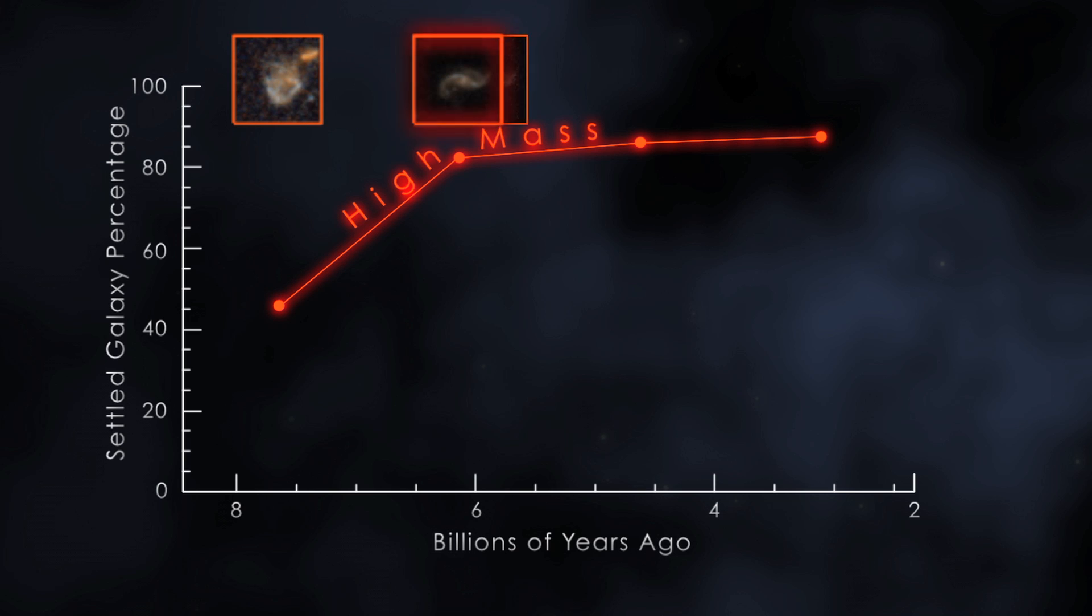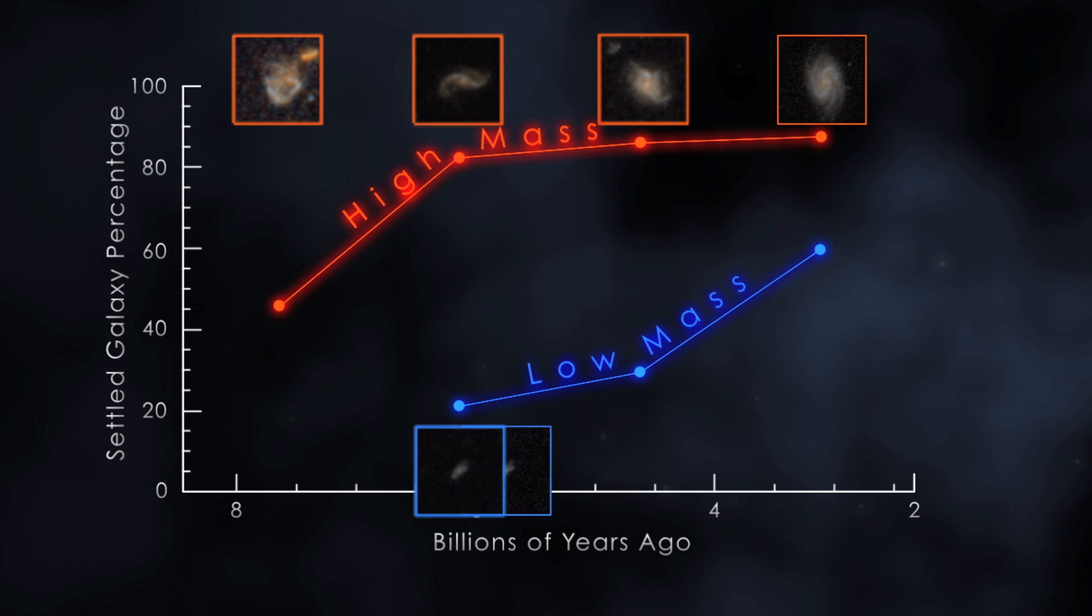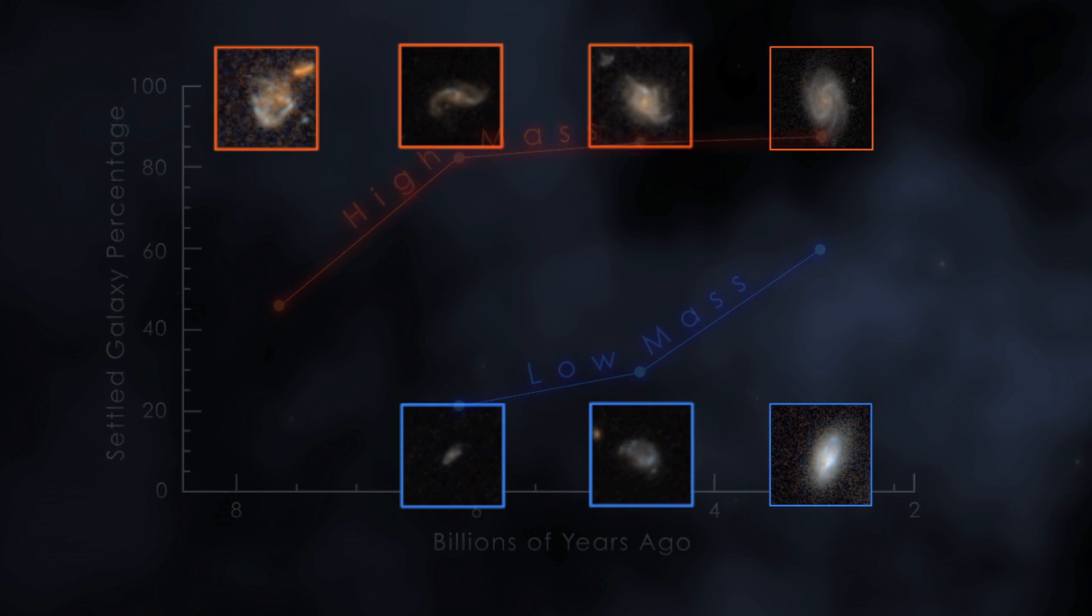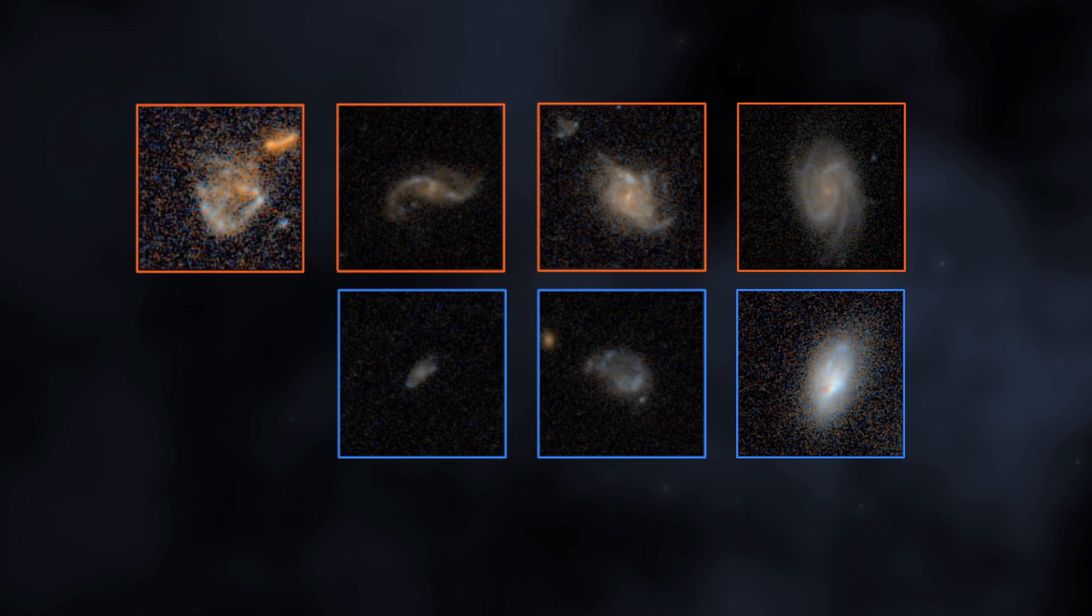Here you're seeing it for the higher mass systems. It's also the case for the lower mass systems. The percentage of galaxies which are settled increases with time, but the overall percentages for the lower mass systems are always lower than the higher mass systems. We've yet to figure out why this is.